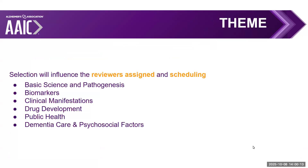Abstracts to AAIC fall into one of several themes, and your selection will influence the reviewers and also influence the scheduling of a talk or poster if your abstract is selected. The themes are basic science and pathogenesis, biomarkers, clinical manifestations, drug development, public health, and dementia care and psychosocial factors. It's very possible that your science falls into multiple themes, but you want to think very carefully when submitting about the review process and scheduling — who you might want to be scheduled alongside.